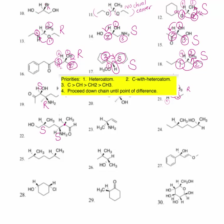For the remaining asymmetric center, hydrogen is number four. We have a carbon with a nitrogen and a carbon with an oxygen. The oxygen wins out because it's heavier, so it's priority number one. The carbon with nitrogen is priority number two. The methyl group is number three. This rotates clockwise with hydrogen to the rear, which makes this asymmetric center an R.